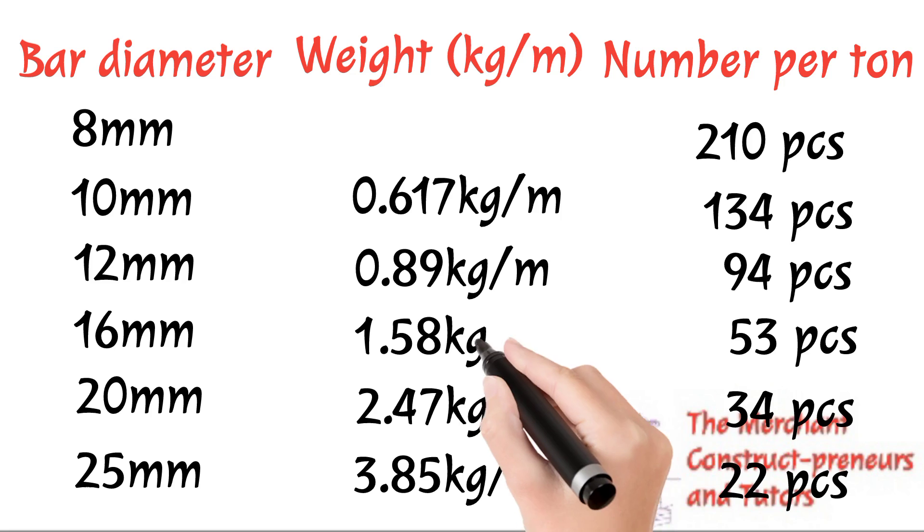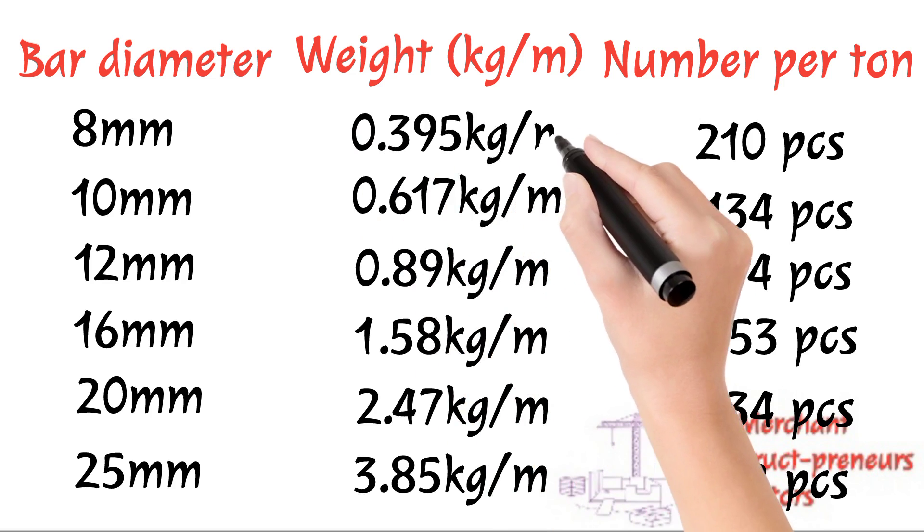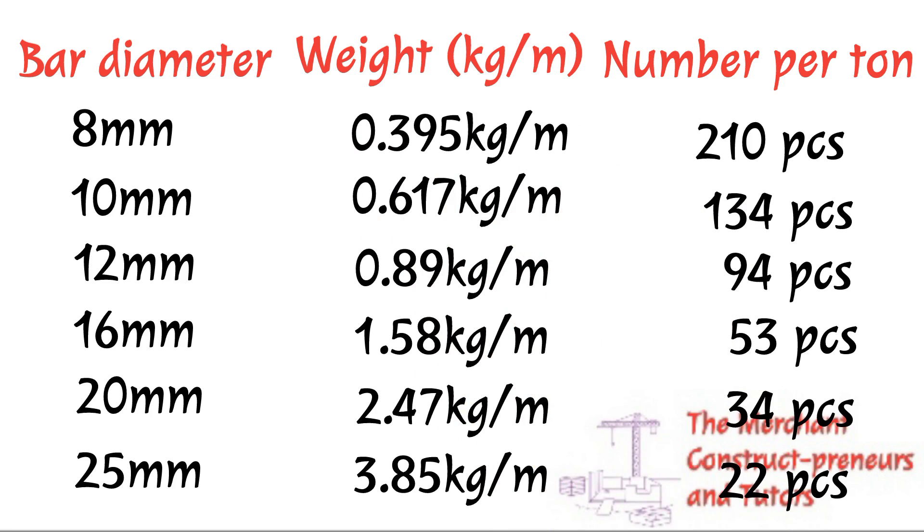For 8 millimeter from our calculation that we did, we have a weight per meter as 0.395 kilogram per meter, and the number of reinforcements in one ton is 210 pieces. For 10mm we have it as 0.617 kilogram per meter and 134 pieces. For 12mm, 0.89 kilogram per meter, 94 pieces. 16mm, we have it as 1.58 kilogram per meter, 53 pieces in one ton. 20mm we have it as 2.47 kilogram per meter, 34 pieces.